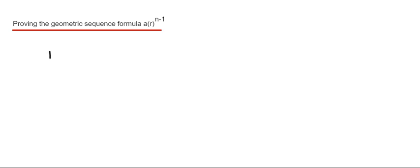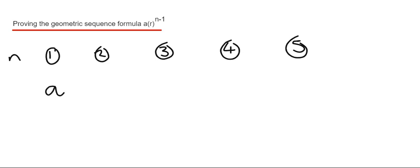So first of all then write the numbers 1 to 5 down on your page. So if we call these numbers N, the first term in that geometric sequence is going to be called A.